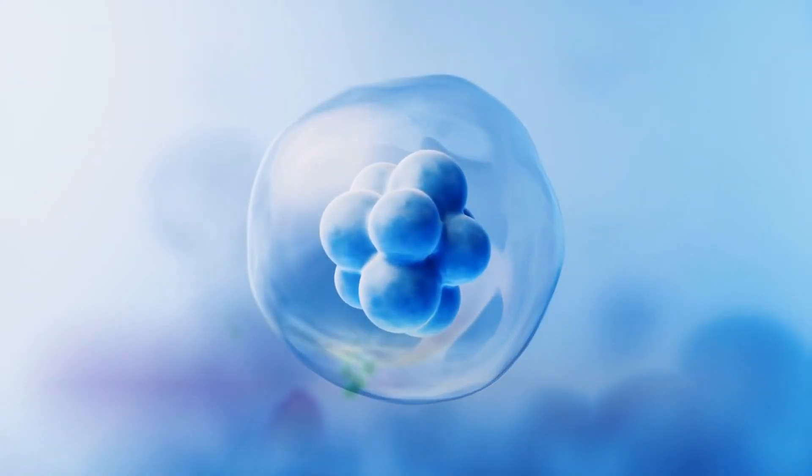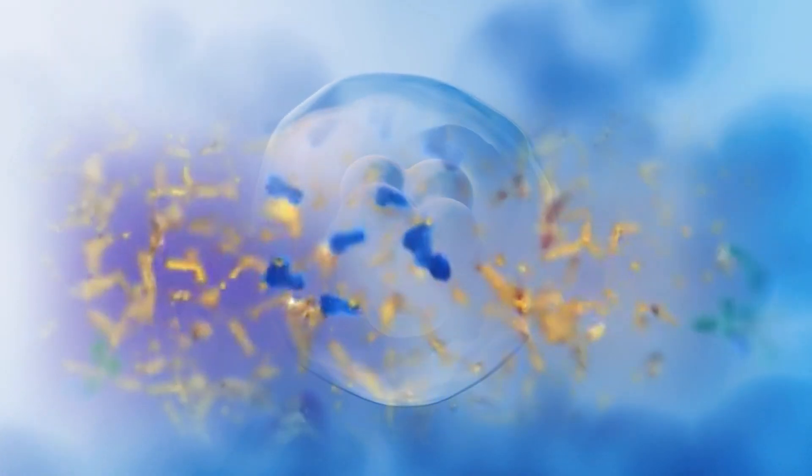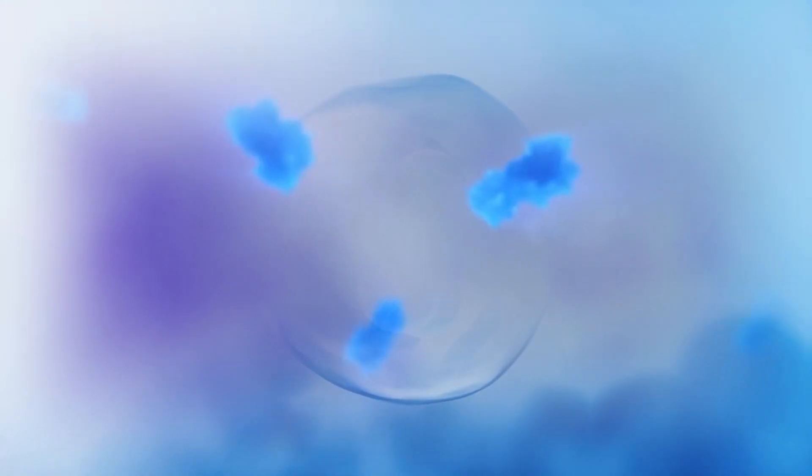In histology preparations of formalin-preserved paraffin-embedded enucleate stained with hematoxylin and eosin, cross-sections with a columnar lining containing a pink substance were observed.